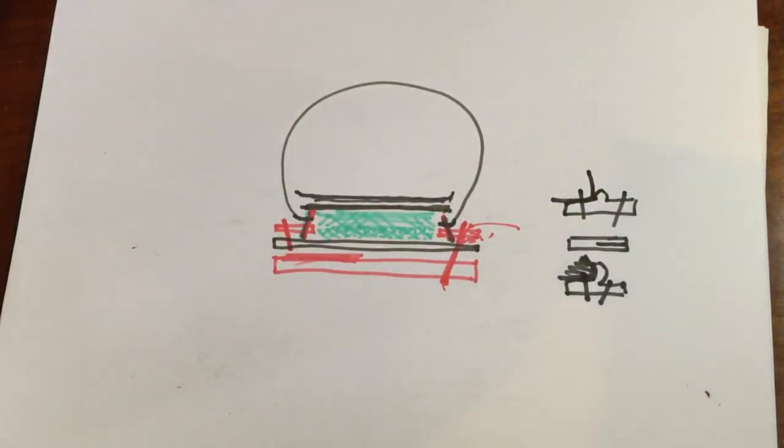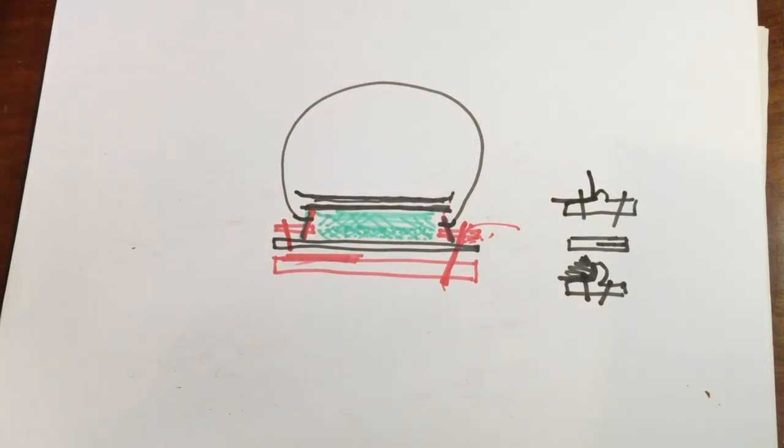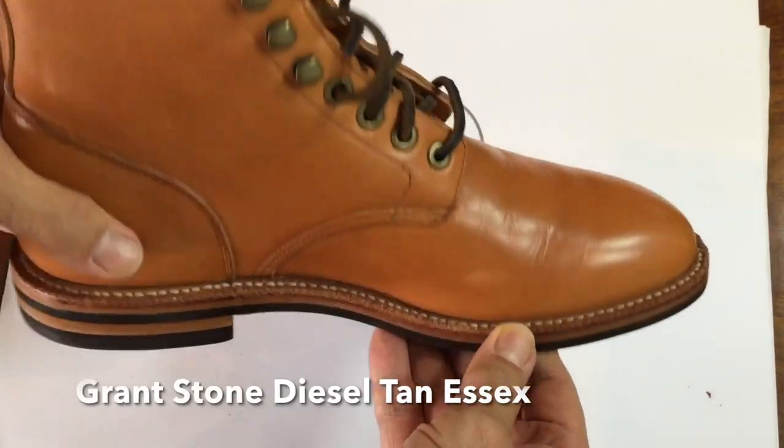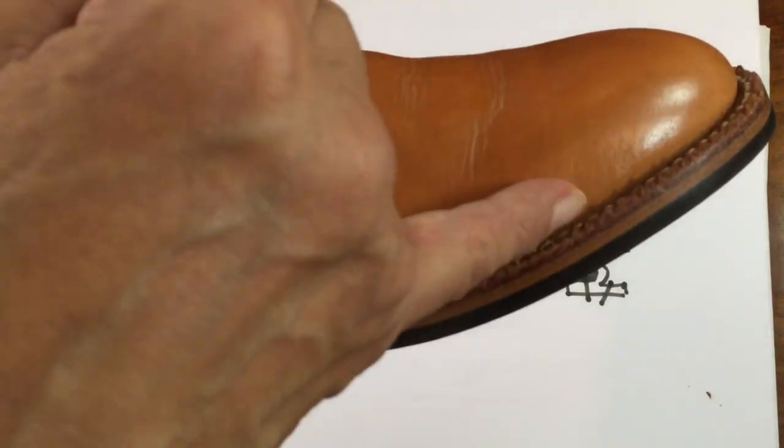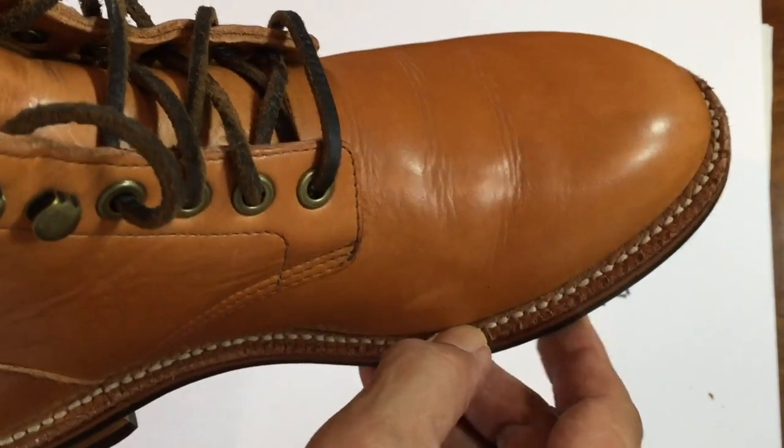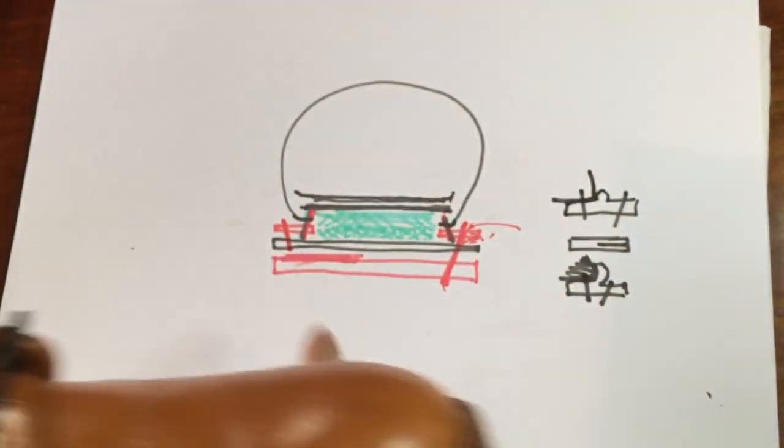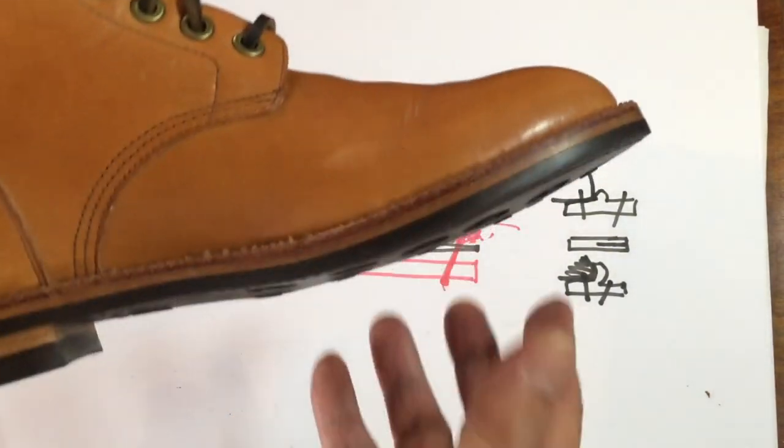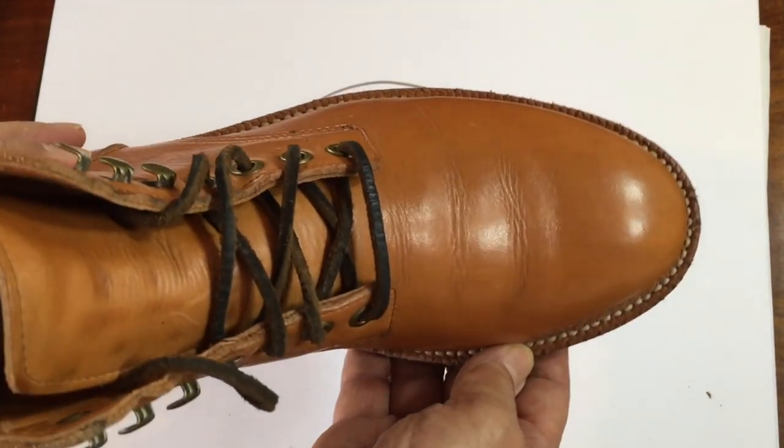A normal flat welt, like on these Grant Stone diesel boots, does not have that flange. It's just flat and it's sewn all the way through. It's similar to these. So that's the difference between the welts.